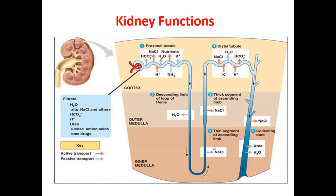The first segment of the tubule is the proximal convoluted tubule, which is the main site of reabsorption of most electrolytes like bicarbonate, potassium, sodium chloride, and nutrients. It is also the site for reabsorption of sodium and hydrogen. Next, we have the loop of Henle with its descending limb and ascending limb.